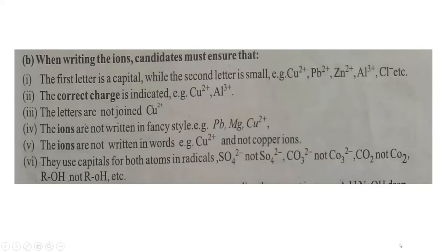When writing ions, ensure the first letter of a chemical symbol is capital, the second letter is a small letter, and letters should not be spaced apart or touching incorrectly. For example, 'Pb' must have capital P and small b. The charge must also be correct — derived from the valence of the element.